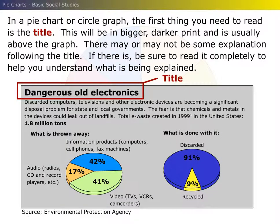In a pie chart or circle graph, the first thing you need to read is the title. This will be in bigger, darker print and is usually above the graph. There may or may not be some explanation following the title. If there is, be sure to read it completely to help you understand what is being explained.